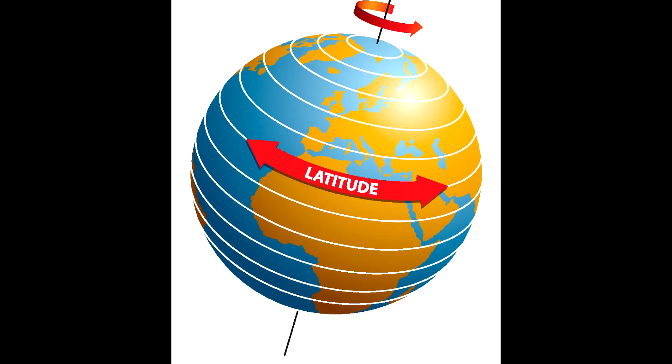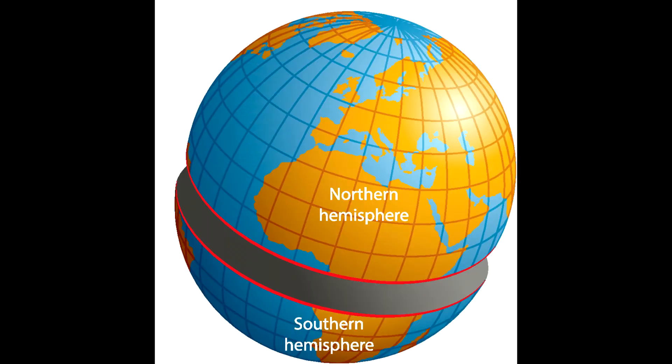Lines of latitude circle the earth in an east to west direction and are parallel to each other. There are several important lines of latitude.